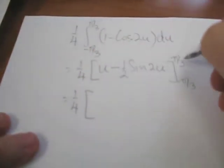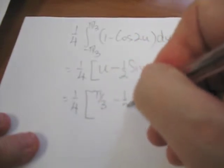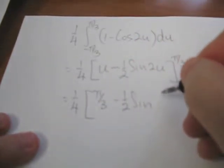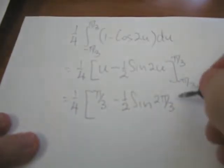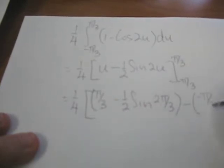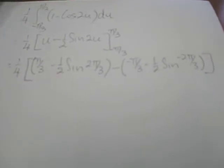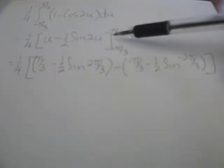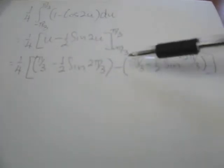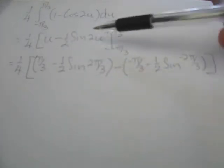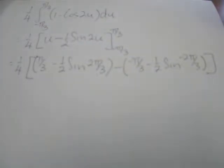Let's see if we can evaluate this. We put π/3 in here for u. So that's our first one. And now we subtract, putting negative π/3. And we've applied the fundamental theorem of calculus. So we've put the π/3 in here, and we've subtracted, putting the negative π/3 into the same result of the integration.